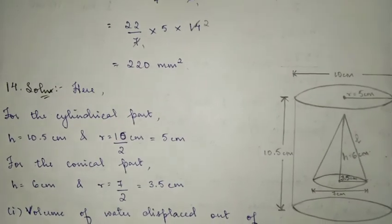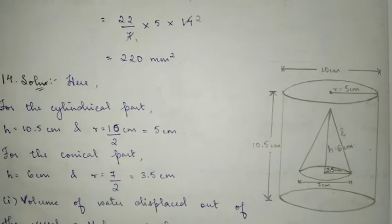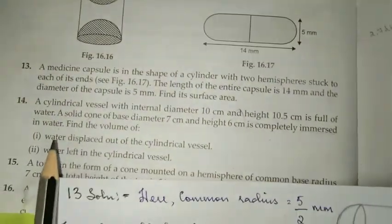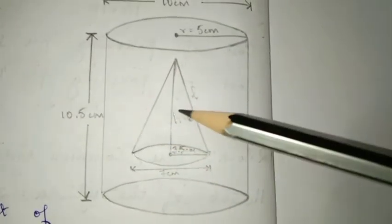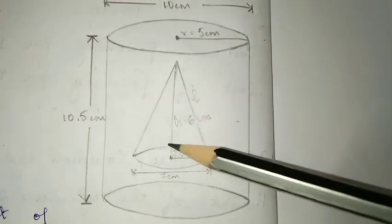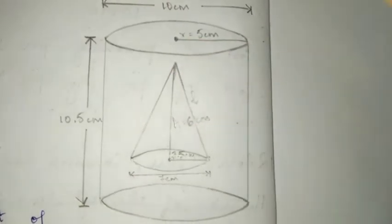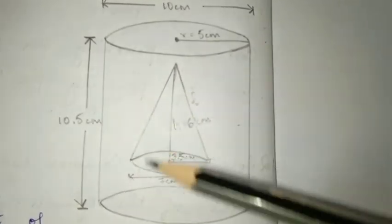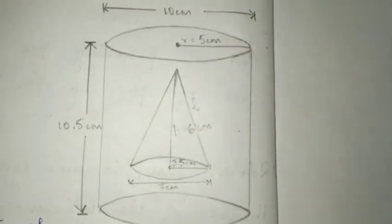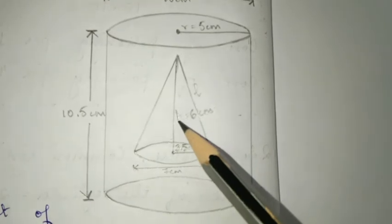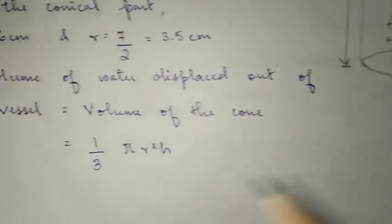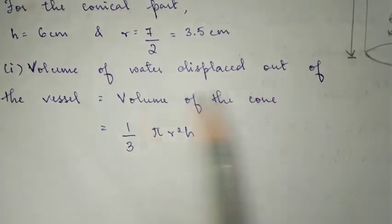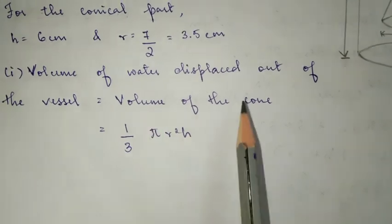Alright, now let's move on to sub number 1. Again, the question they're asking is to find the volume of water displaced out of the cylindrical vessel. Now, the vessel is a cylinder that is full of water. When the cone is immersed, that cone displaces water out. The water displaced, the volume of water displaced equals the volume of the cone.